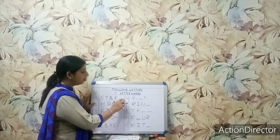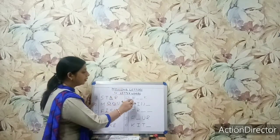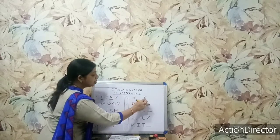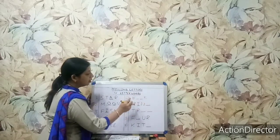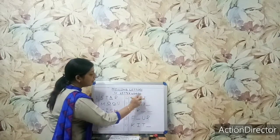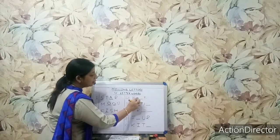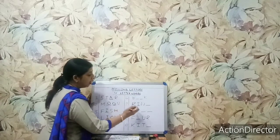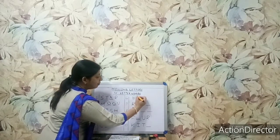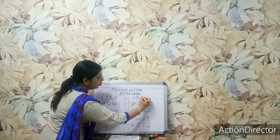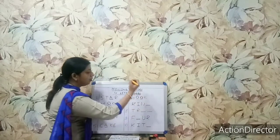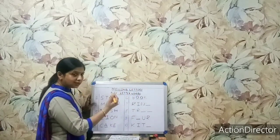Now number 6: B-dash-dash-K. What will it become if I write O-O here? It will become a book — B-O-O-K, book. We read books.